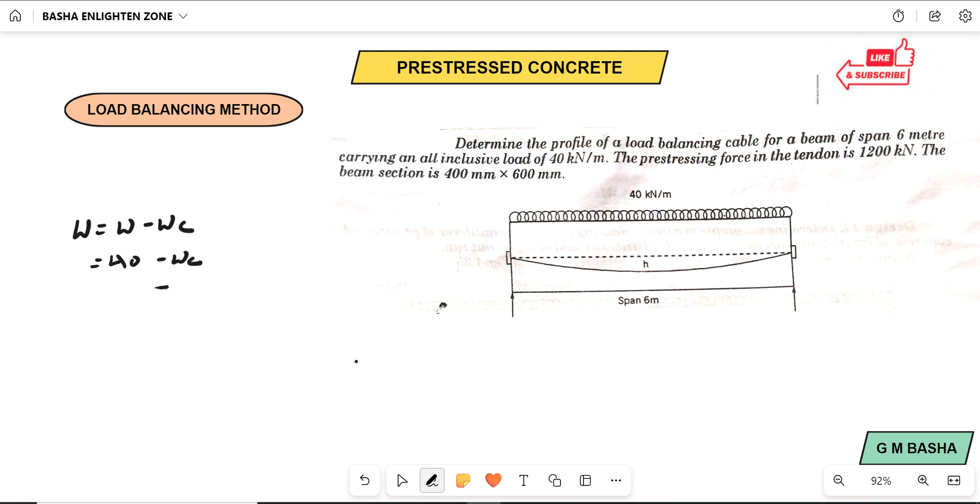What is this WC? For WC, 8pH by L square. Like that we are solving. But here, in the load balancing method concept, what is the definition here? What we have to remember?